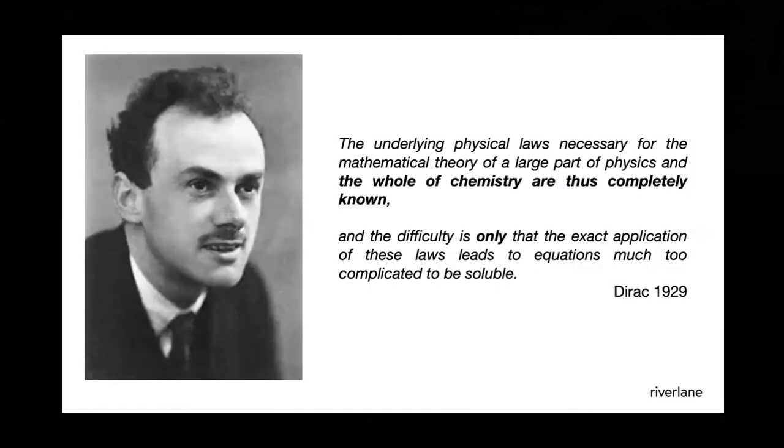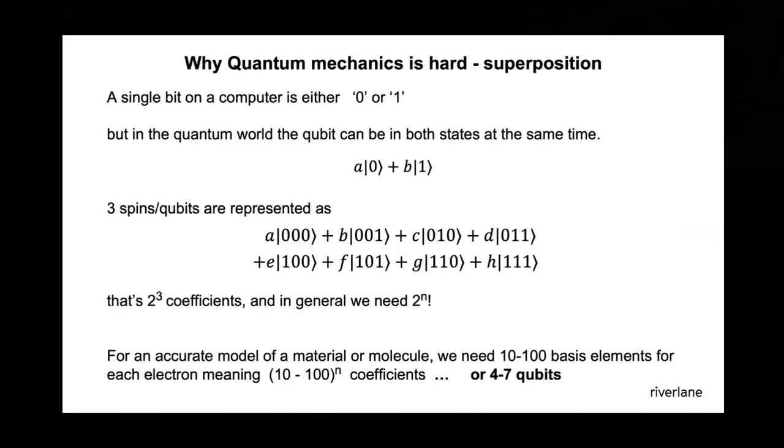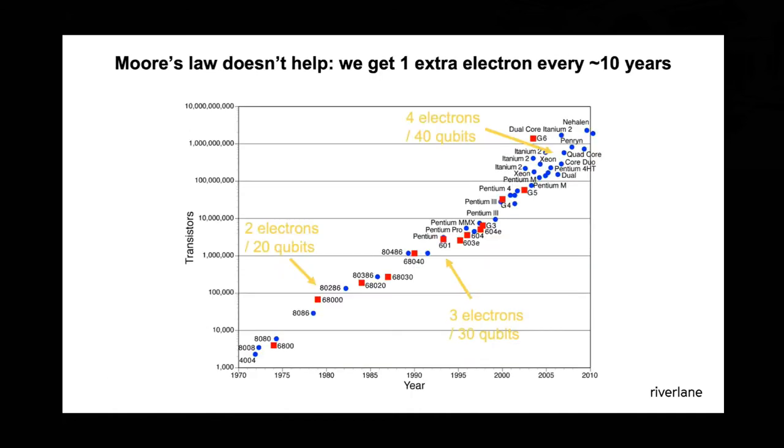And of course we have other laws of physics and quantum mechanics is the hugely successful law of physics. And what we want to do is to solve these equations. So I'm just going to quote Dirac here because I think he puts it so amazingly well. We have this underlying physical laws enough to explain the whole of chemistry. And the only problem is to apply these laws, to make them solvable. And of course, the reason quantum mechanics is so hard, well, one of the reasons is that the number of coefficients grows so rapidly as the size of the system scales. So in chemistry, you have typically 10 to a hundred basis sets for each electron. So you end up with sort of 10 or 100 to the N coefficients for N electrons. And so building bigger and bigger classical computers is never going to help you because you only get an extra electron every 10 years or so.